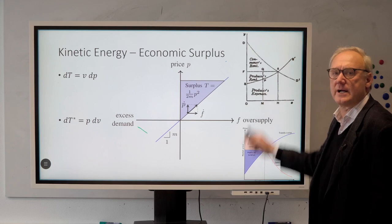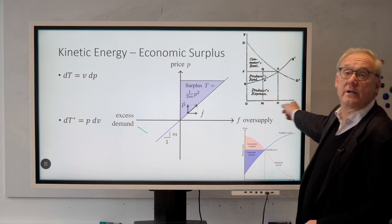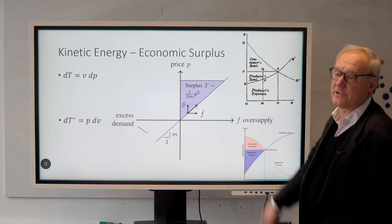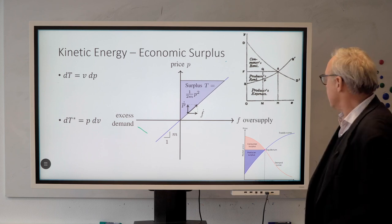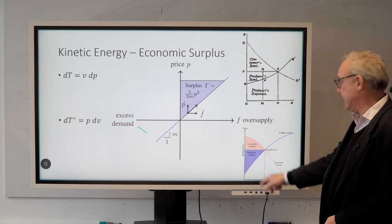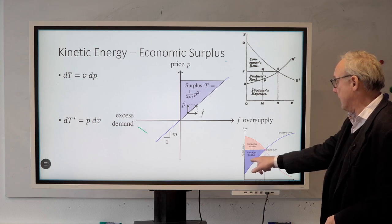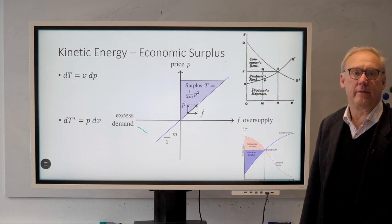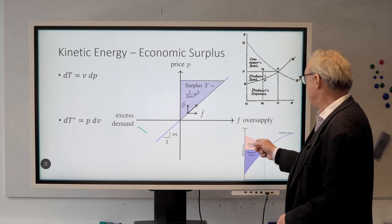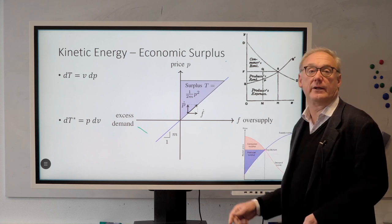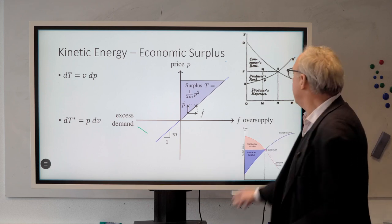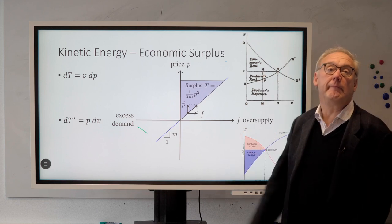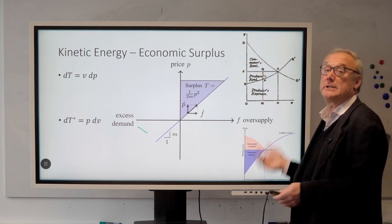There's a graph here — this is Marshall. Marshall is the inventor of all this supply and demand. This is what you find in Wikipedia. You can clearly see here that the kinetic energy is called the surplus. Why? Because this is V, and you do a little dP, and you integrate it out, and there you are. But here the guy who invented it calls it rent. We would call this the cost, and he calls it expenses.